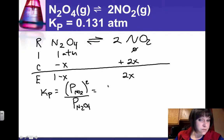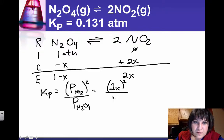So now I'm going to put in my equilibrium values. NO2 is 2x, that one gets squared. And then N2O4 is 1 minus x, and that must be equal to my Kp 0.131 atmospheres.